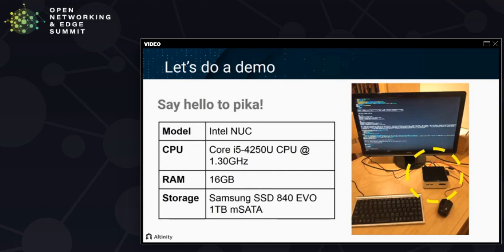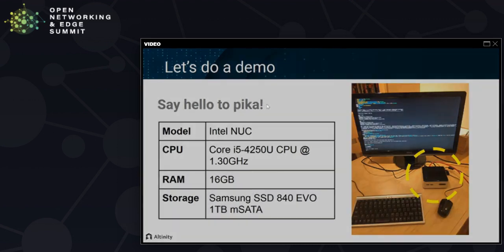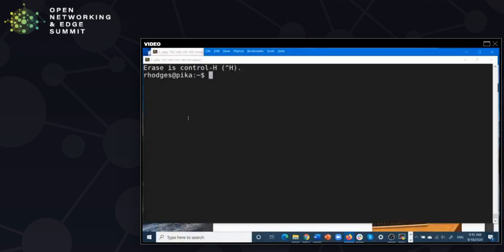This gives you some background for why ClickHouse is particularly efficient as well as fast. Now let's do a demo showing some of these things in action. I'd like to introduce you to my Intel NUC — its name is PICA. It has a Core i5 processor at 1.3 GHz, adequate RAM, and decent storage. But this is not a quick machine by any means.